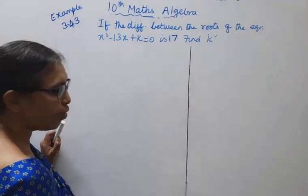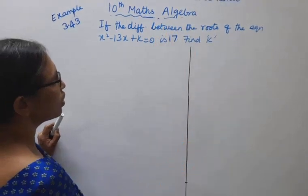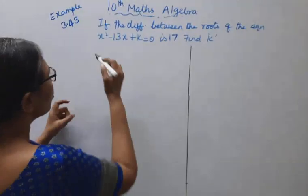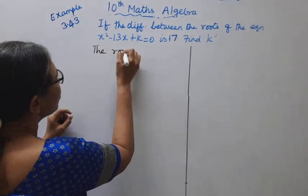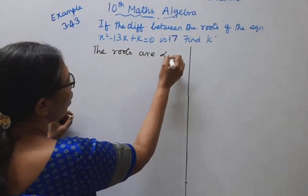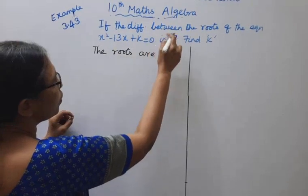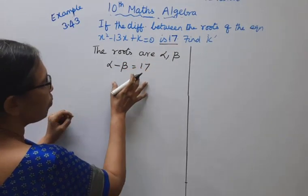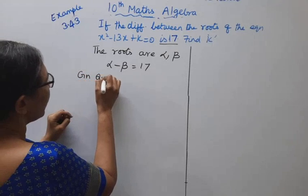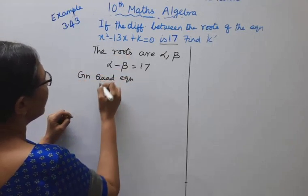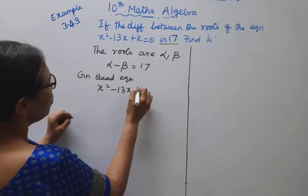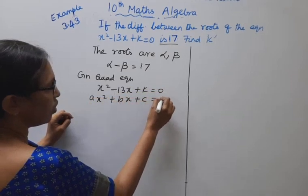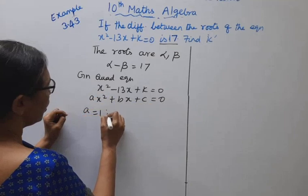The difference between the roots is 17. The roots are alpha and beta, so alpha minus beta equals 17. The given quadratic equation is x squared minus 13x plus k equal to 0, comparing with ax squared plus bx plus c equal to 0: a equal to 1, b equal to minus 13, c equal to k.